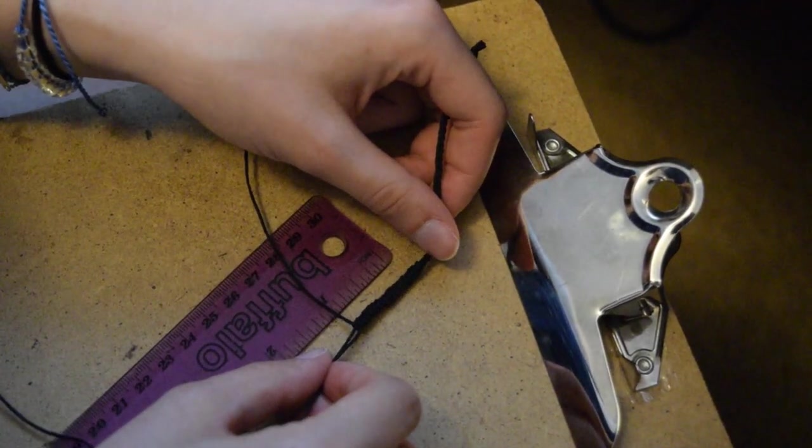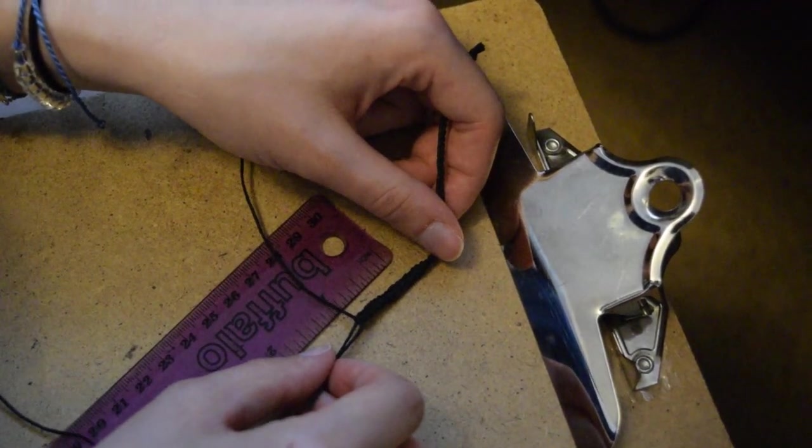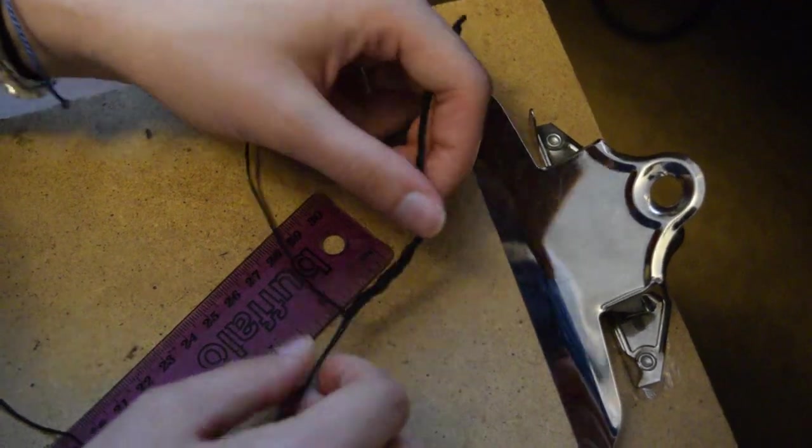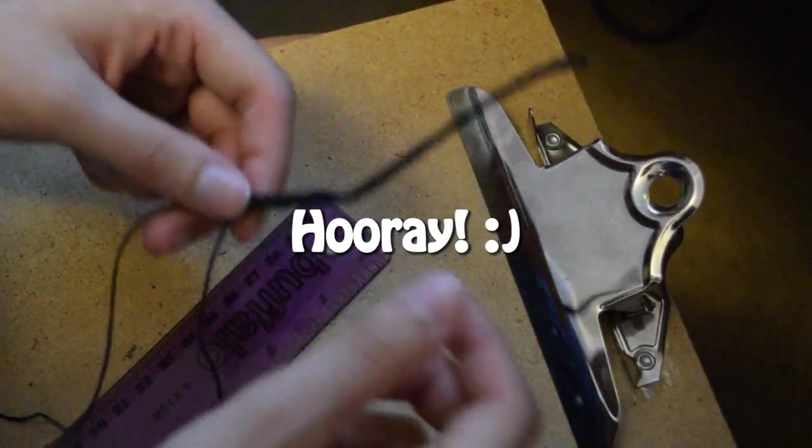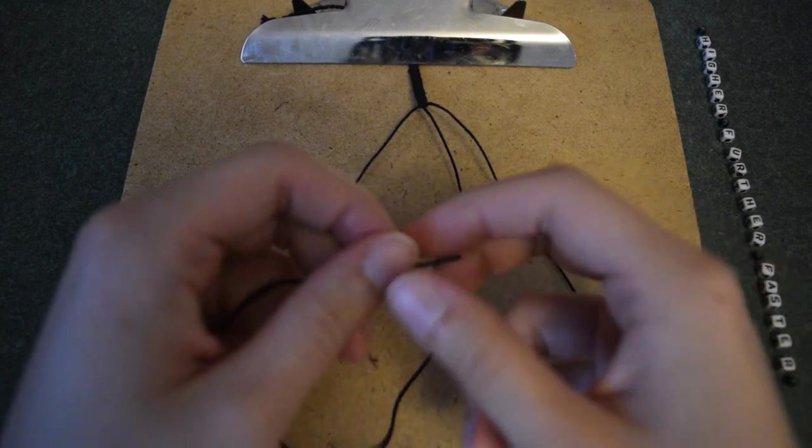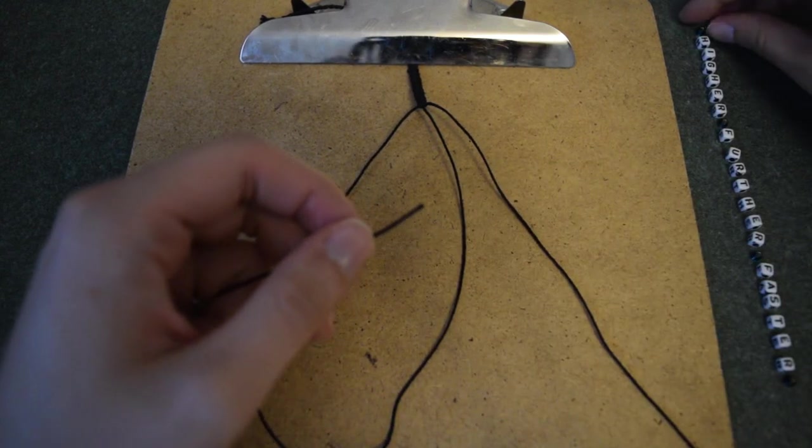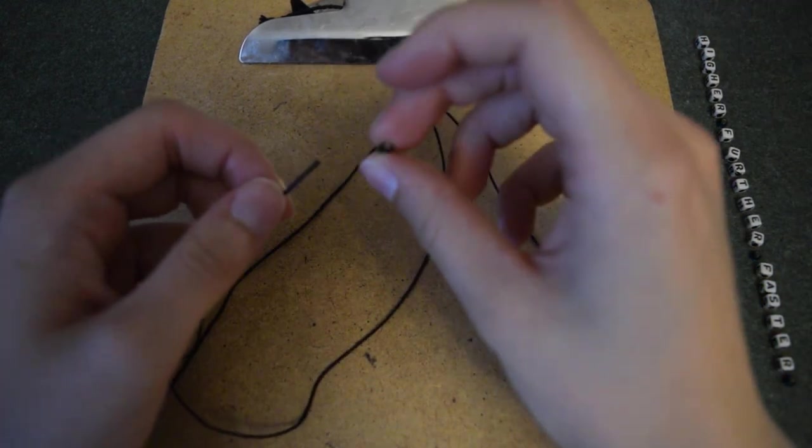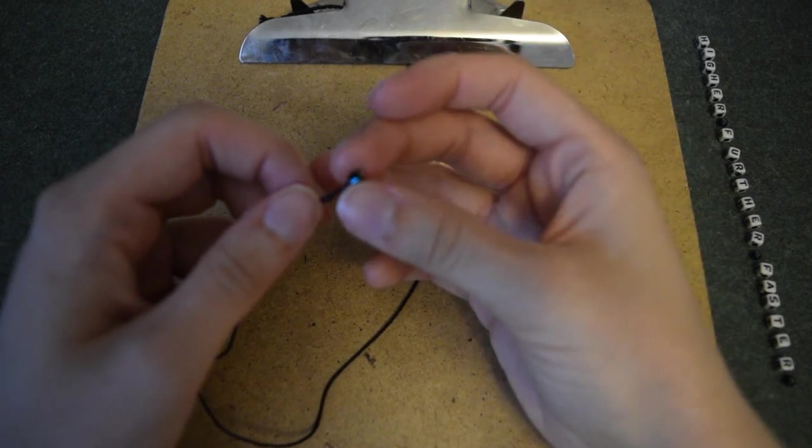Once you have tied approximately one inch of the square knot pattern, we get to the part that's even more fun. It's time to add the beads. I decided to put glass beads as spacers outside each word I wanted on my anklet. So first I am threading one of the glass beads on the core strand, pushing this bead up to the square knots I have already tied.